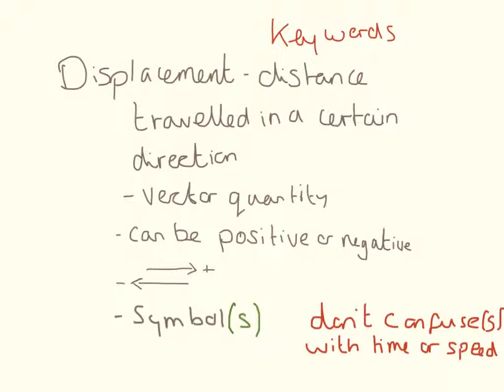Displacement is a distance in a certain direction, and this is the really important part you have to remember. It's a vector quantity because it comes with a distance and it can be positive or negative.